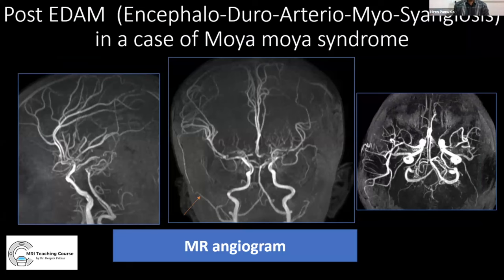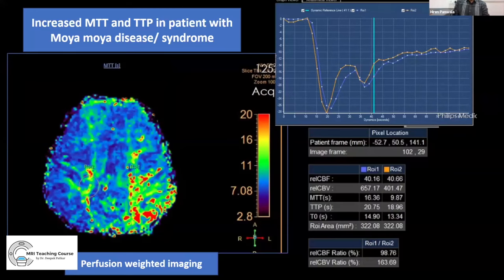Post-EDAS (encephaloduroarteriosynangiosis) surgery images showed an anastomosis between the right superficial temporal artery branch of the ECA and cortical pial arteries of the right cerebral hemisphere, with the superficial branches well-opacified on MR angiogram — indicating a patent anastomosis. In Moyamoya disease or syndrome, perfusion weighted imaging is used to assess improvement after surgery, evaluating parameters such as MTT (mean transit time) and TTP (time to peak).